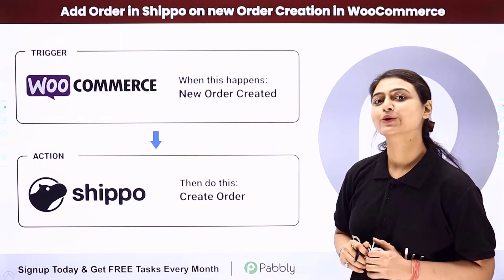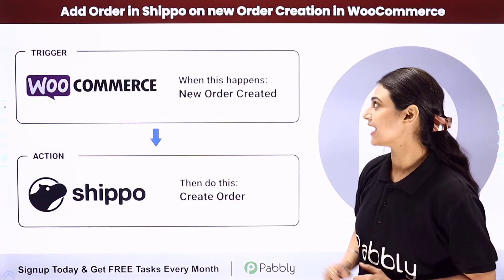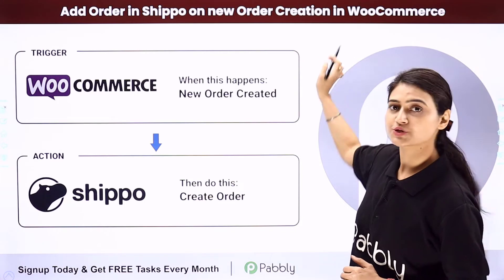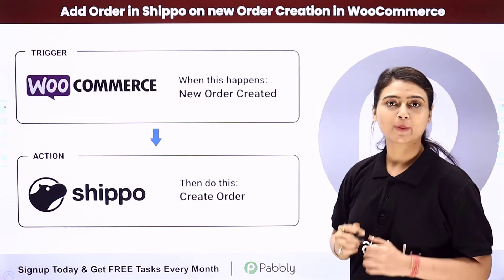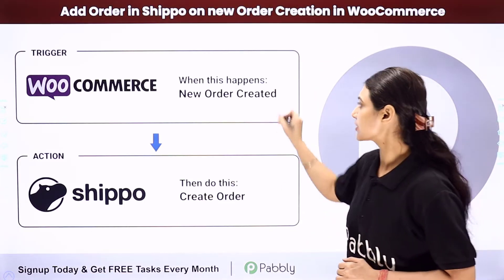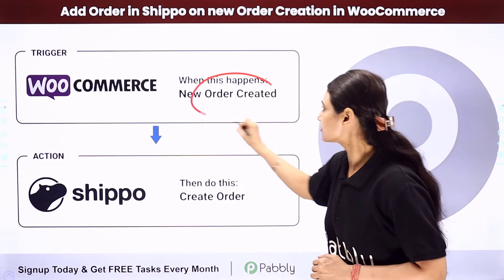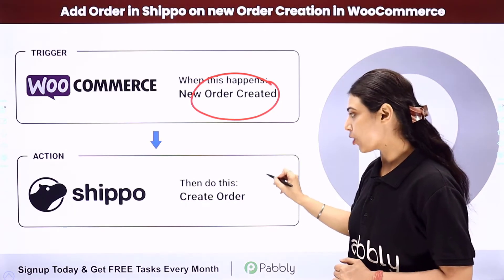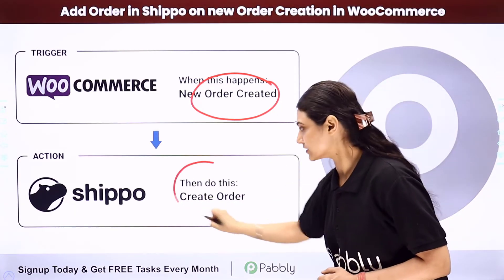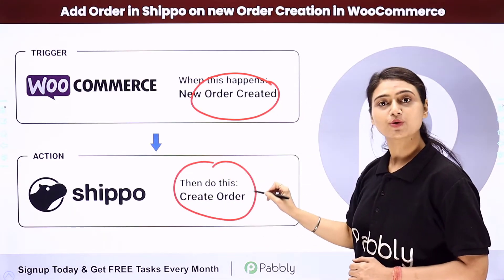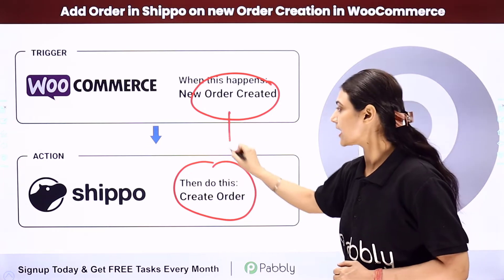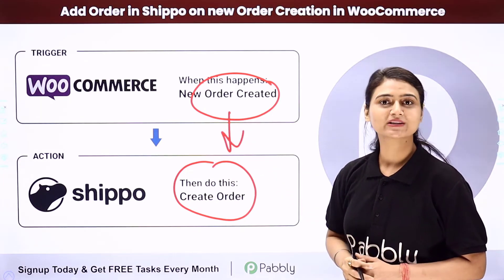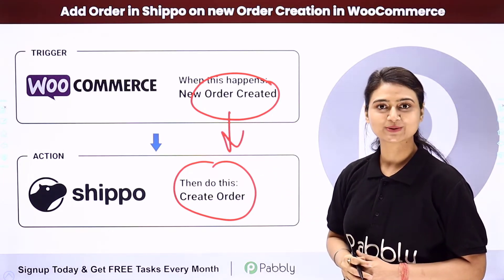In this video, we will learn how you can automatically add an order in Shippo on new order creation in WooCommerce. Every time a new order is created in WooCommerce, simultaneously an order should be created in Shippo. We are going to automate this entire process using Pabbly Connect.